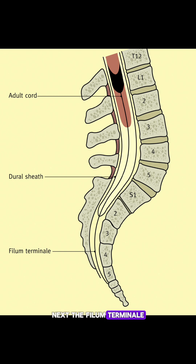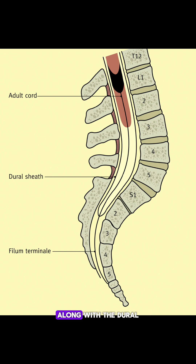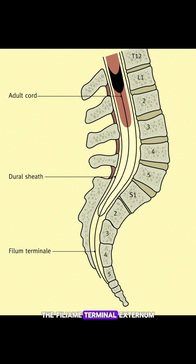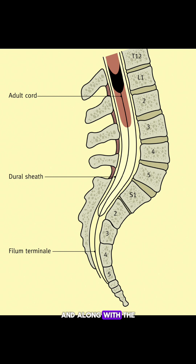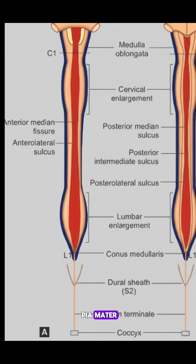Next, the filum terminale. The filum terminale internum, along with the dural sac, extends up to the lower border of S2. The filum terminale externum extends further, and along with the pia mater, it reaches the first coccygeal segment.